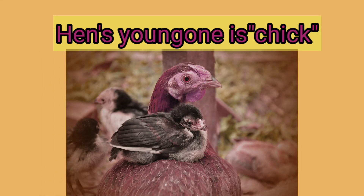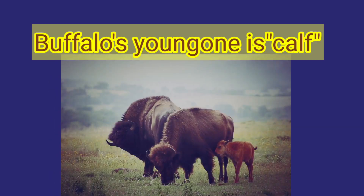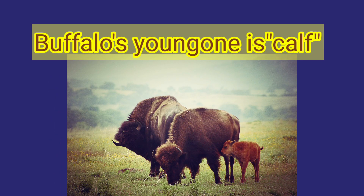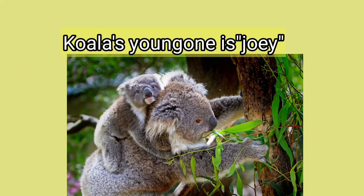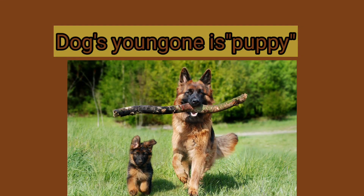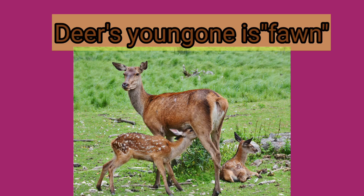Hen is Chick. Buffalo is Calf. Kangaroo is Joey. Koala is Joey. Dog is Puppy. Deer young one is Fawn.